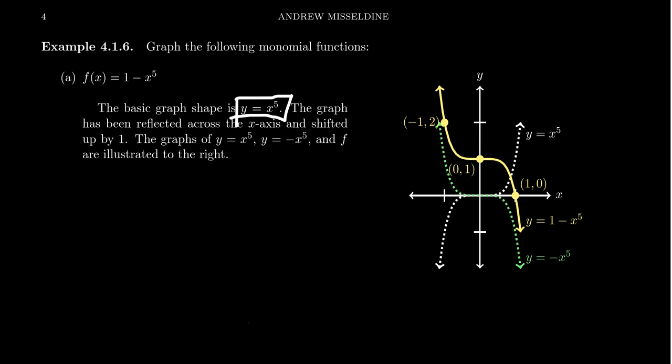What about the one? What is the one doing here? This is going to be a vertical shift up by a factor of one. So you take your green curve and you're going to move everything up by one. Personally, when it comes to graphing these things, I like to think of what happens to these points — the three standard points as you go through this process.